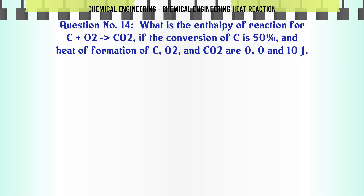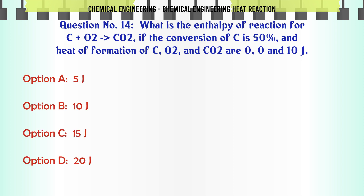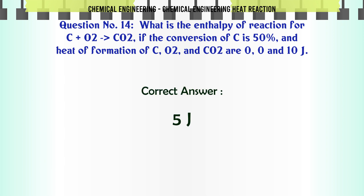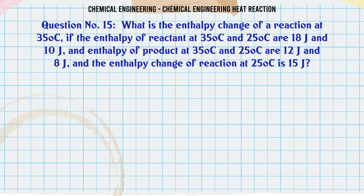What is the enthalpy of reaction for C + O2 → CO2 if the conversion of C is 50% and heat of formation of C, O2, and CO2 are 0, 0, and 10J? A: 5J, B: 10J, C: 15J, D: 20J. The correct answer is 5J.